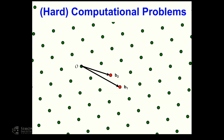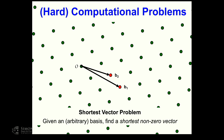There are some computational problems that we can define with respect to this structure — well-known mathematical problems. For example, one problem is the shortest vector problem: given a basis, so given these vectors b1, b2, up to bn, find the shortest nonzero vector — a combination of them that gives us the shortest vector.